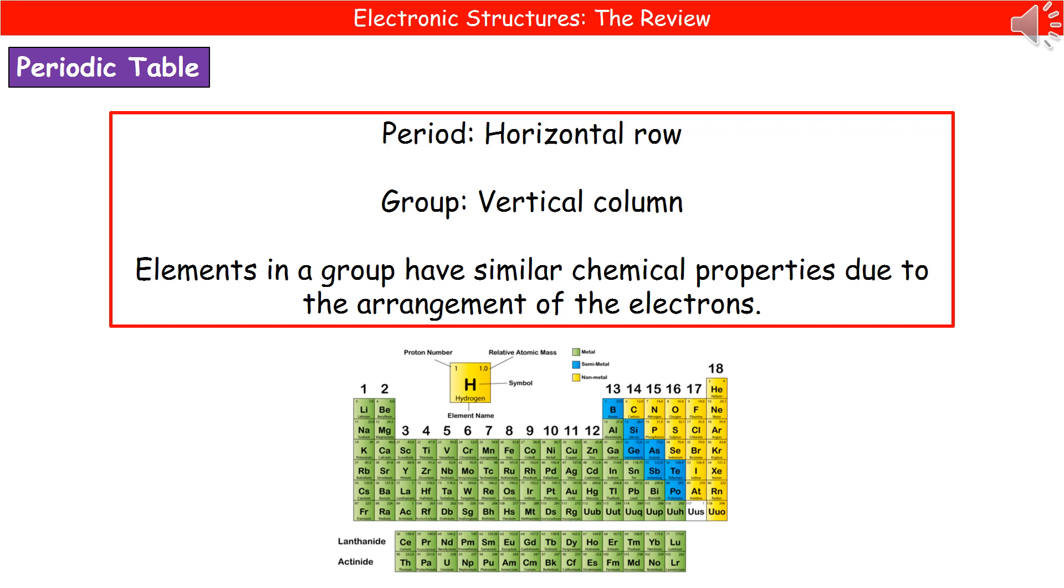First thing we need to know is where we find periods. The periods are the horizontal rows. Now you do need to be careful with this one when looking at the periodic table in your exam, because a lot of people often start counting with lithium as period 1. In fact, lithium is in period 2 because you've got hydrogen and helium at the top there that form the first period.